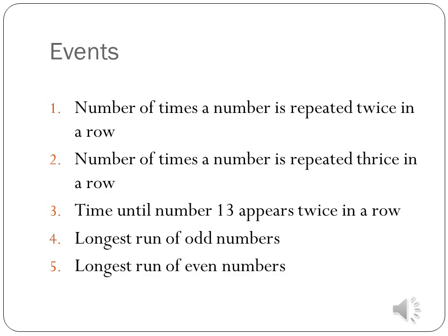Events. The first event is: when I spin a roulette for a given number of times, how often does a number appear twice in consecutive spins? The second event is: if I spin the roulette for a given number of times, how often on average does a number appear three times in consecutive spins?